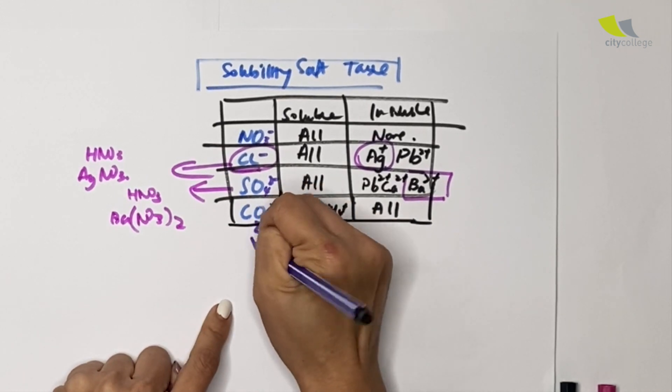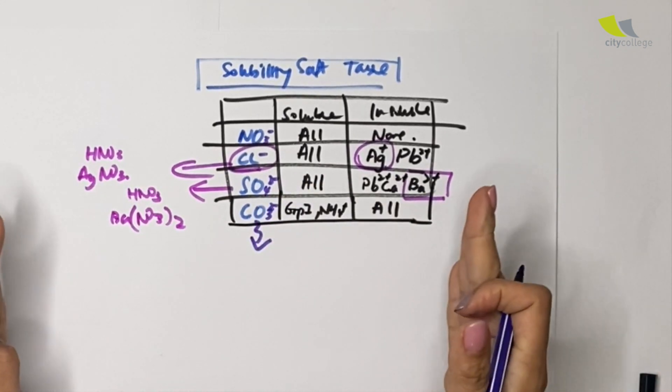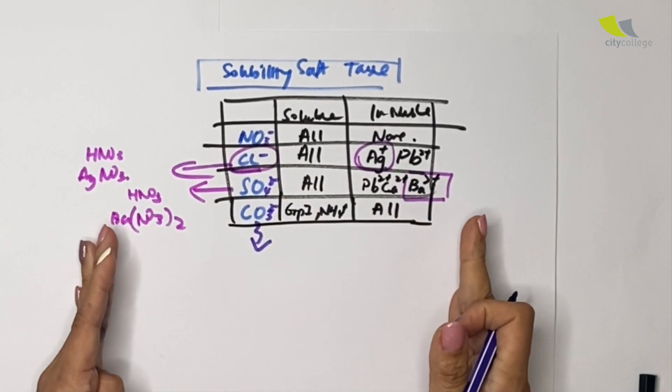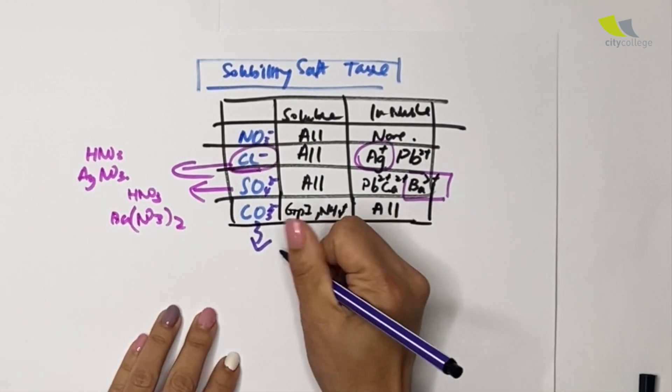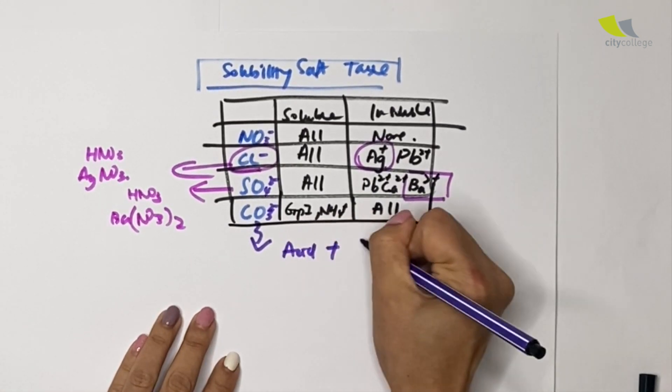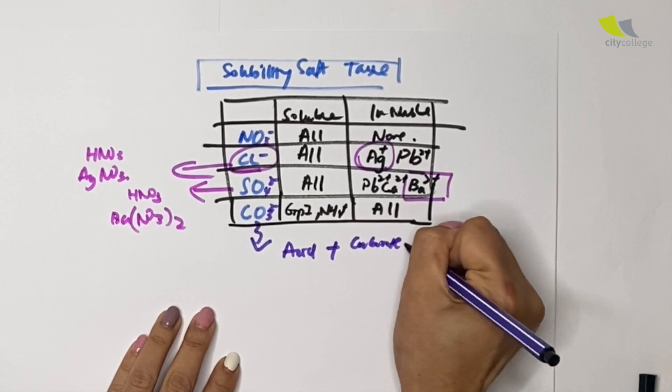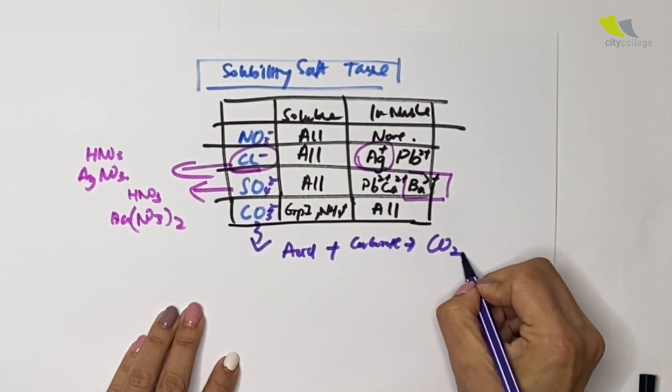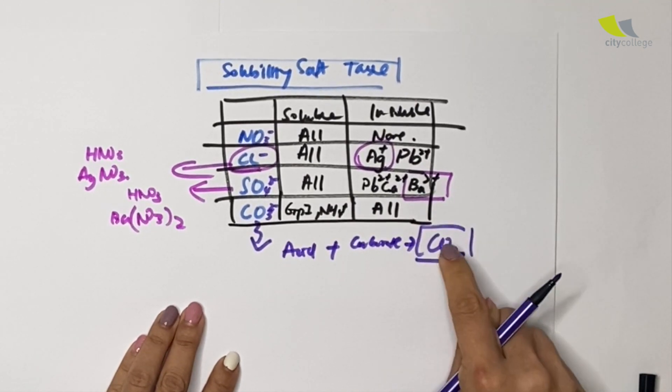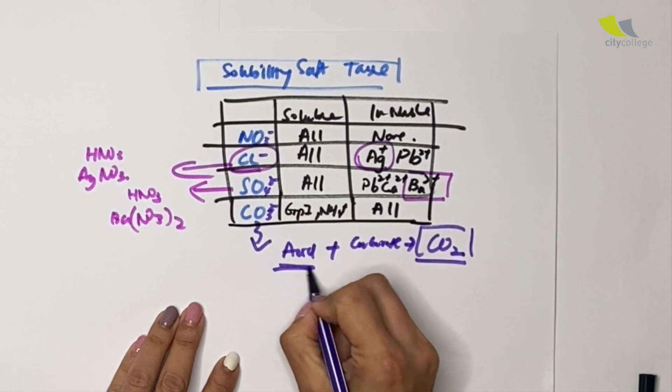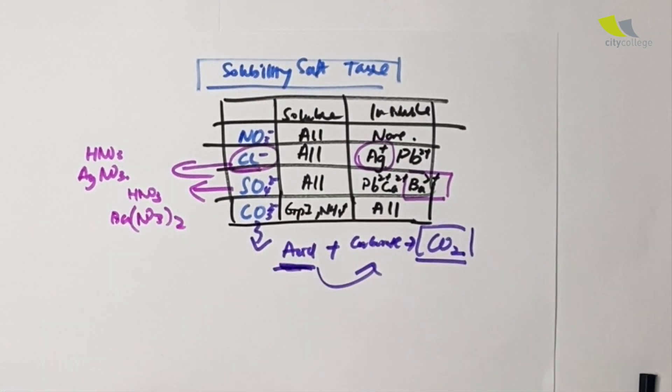Now how about for carbonate? We know in the chemical reactions of acid that I've taught you before, acid plus a carbonate will often give you carbon dioxide. So the existence of carbon dioxide after you add an acid shows that carbonate is present.